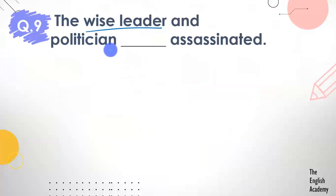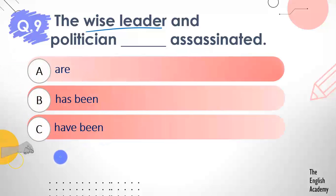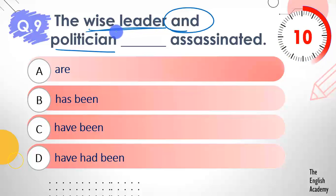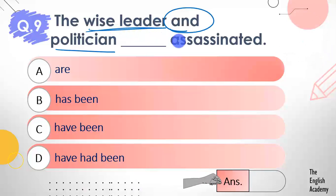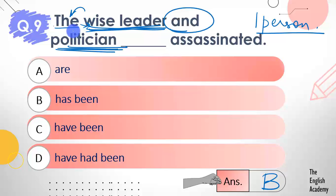Question number 9: The wise leader and politician ___ assassinated. Options: A) are, B) has been, C) have been, D) have had been. Here we have two subjects — 'the wise leader' and 'politician' — joined by 'and'. But are they referring to one person or two? The answer is option B — has been. Both subjects refer to one person, as indicated by 'the' appearing only before the first noun. When one article covers both nouns, they denote the same person, so we use a singular verb.